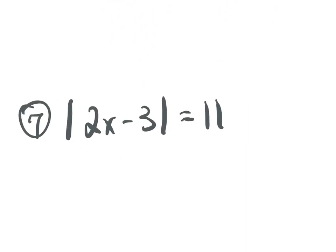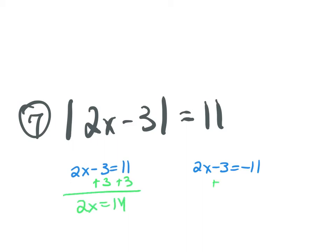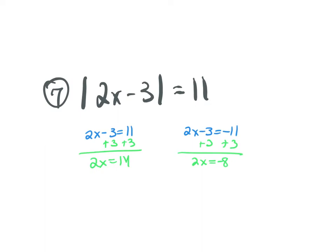Is my absolute value isolated? Yes. So I have 2x minus 3 equals 11 and 2x minus 3 equals negative 11. Add 3 to both sides: 2x equals 14. Add 3 to both sides: 2x equals negative 8. Divide by 2: x equals 7. Divide by 2: x equals negative 4.